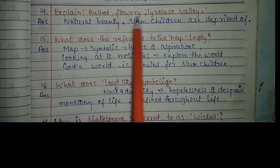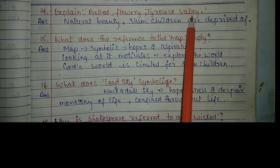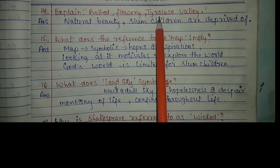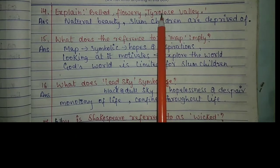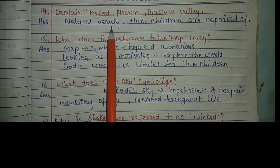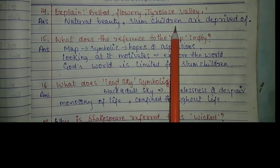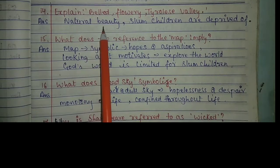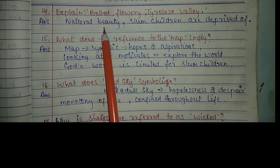Question number 14: Explain 'belled, flowery, tireless valley.' This valley, which is in Austria, suggests natural beauty, and slum children are deprived of natural beauty, fresh air, and a fresh environment.